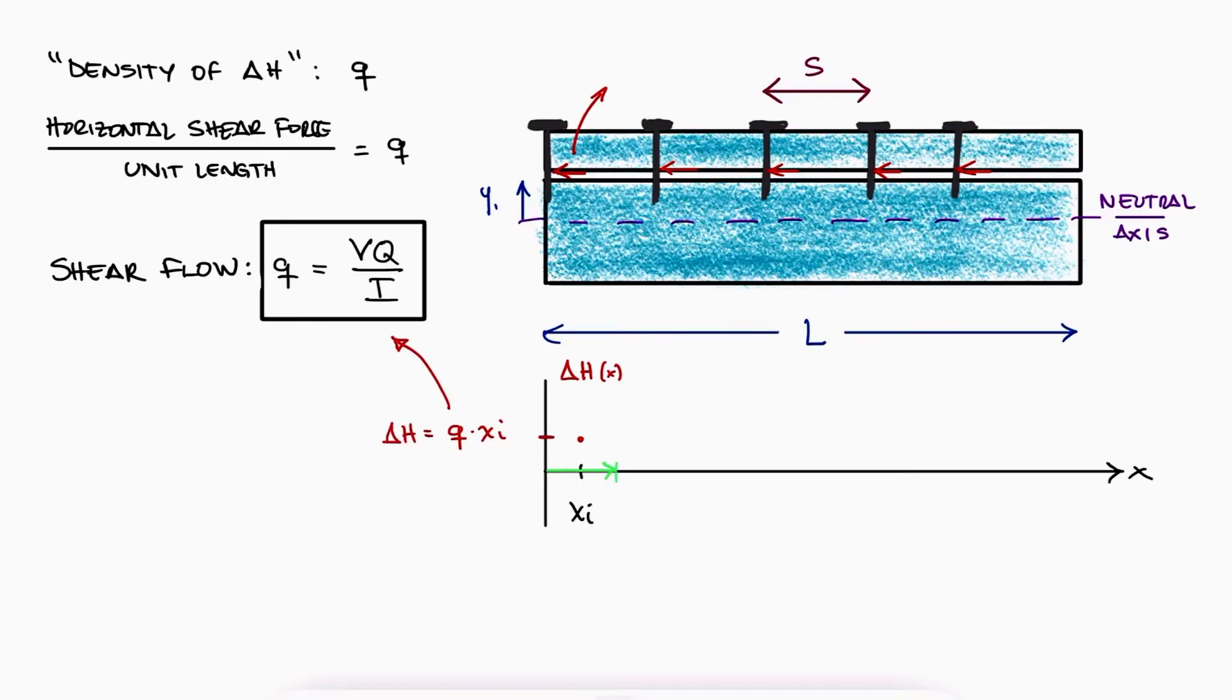As we keep moving, delta H keeps increasing linearly until at some point we find a component, like the nail, that counteracts this force. Right after the nail, we go back to zero delta H and it starts increasing right away as we keep moving along the x-axis.